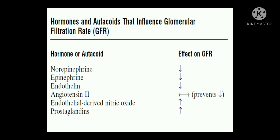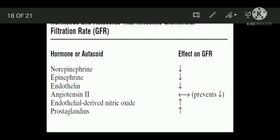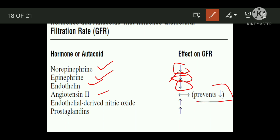Remember these hormones that influence glomerular filtration. Norepinephrine and epinephrine will cause decrease in GFR. Endothelin decreases GFR. Angiotensin 2 tends to prevent decreases. Endothelial-derived nitric oxide and prostaglandins will increase GFR.